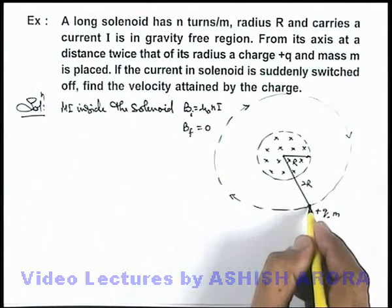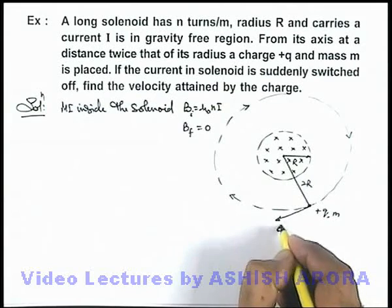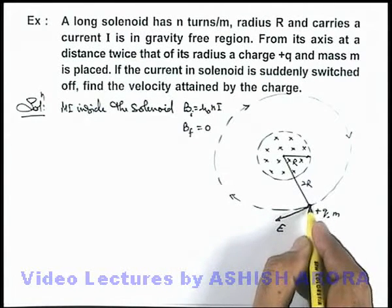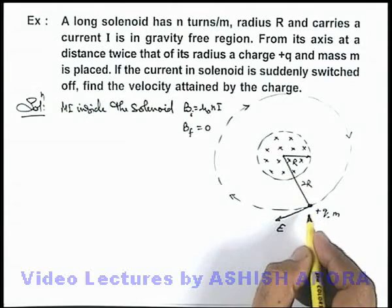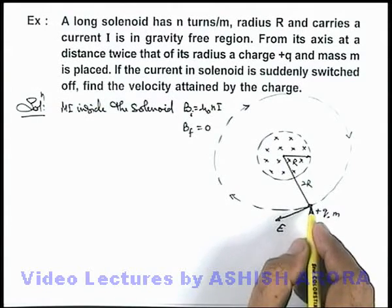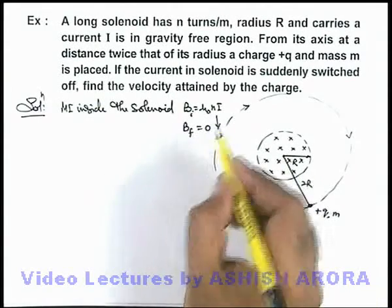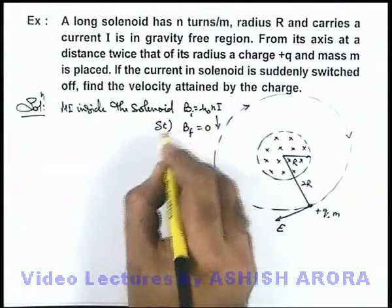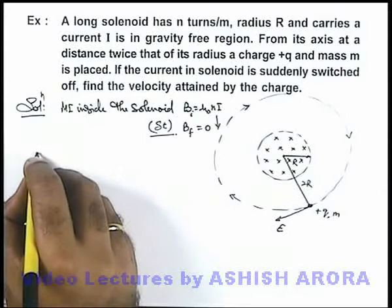So at the location of charge suddenly, a tangential electric field E is induced. And this electric field will last only for that small duration in which the magnetic field drops from μ₀nI to zero. And say the duration is Δt. Then in this situation we can say...